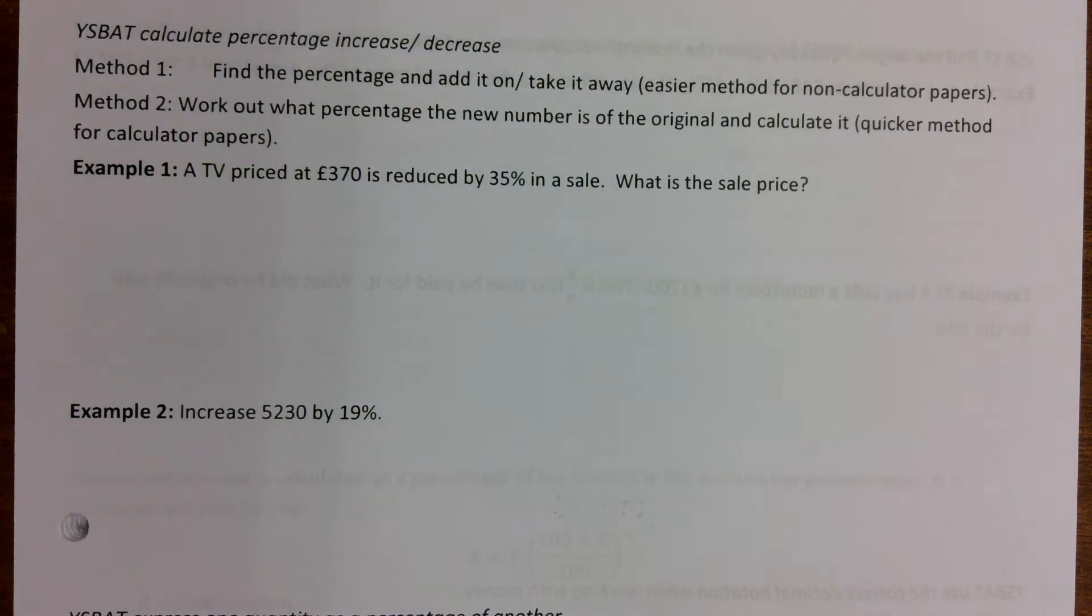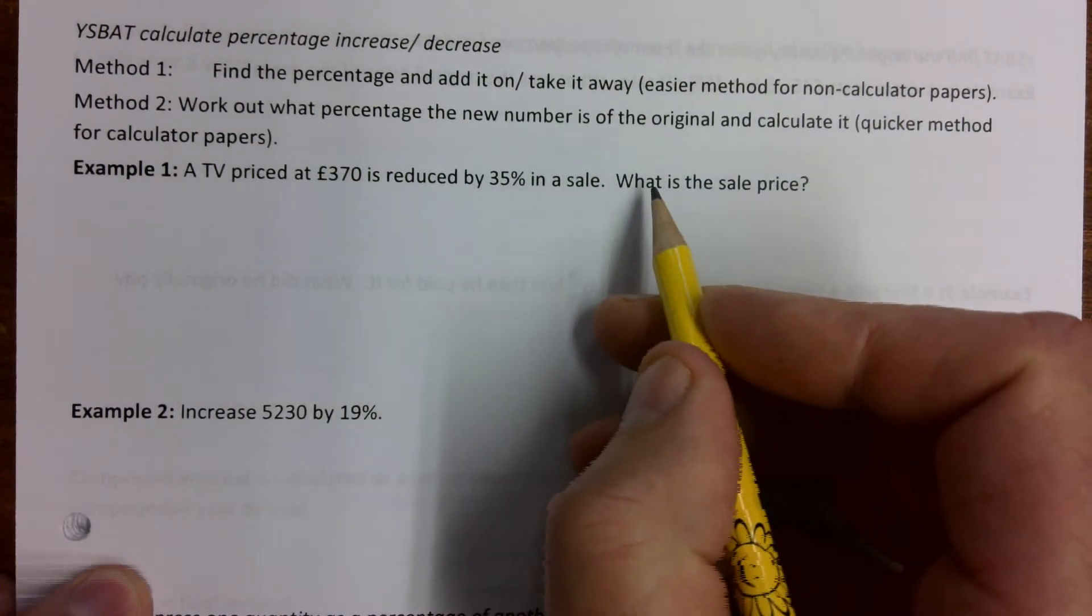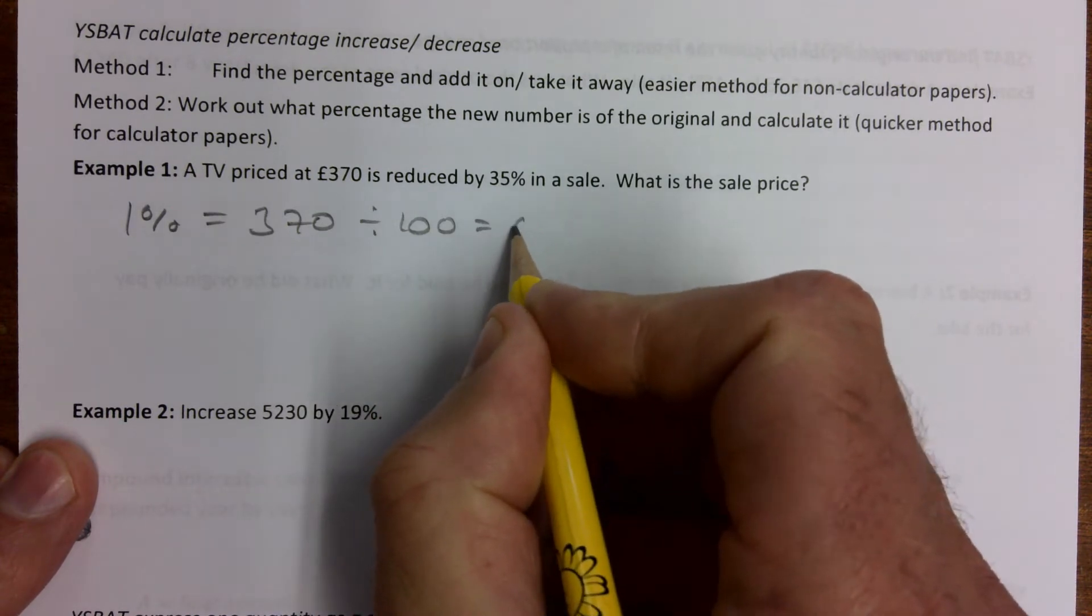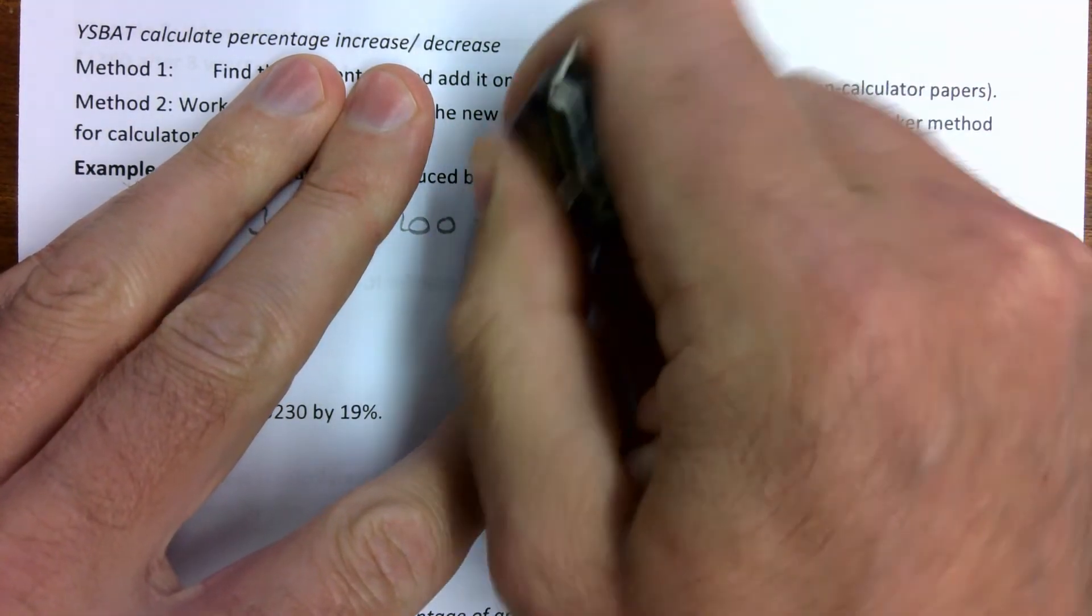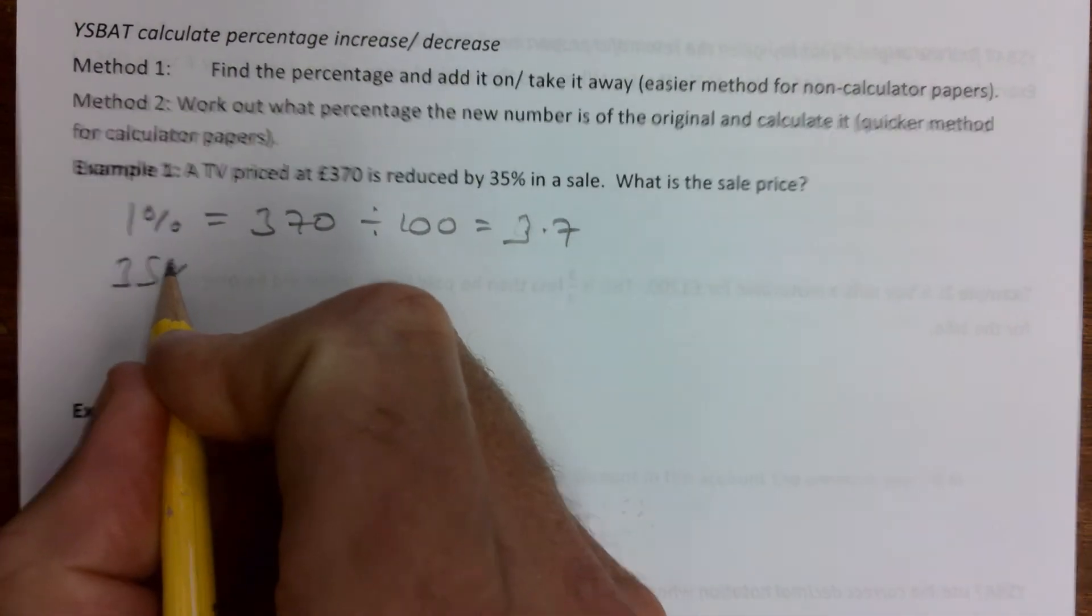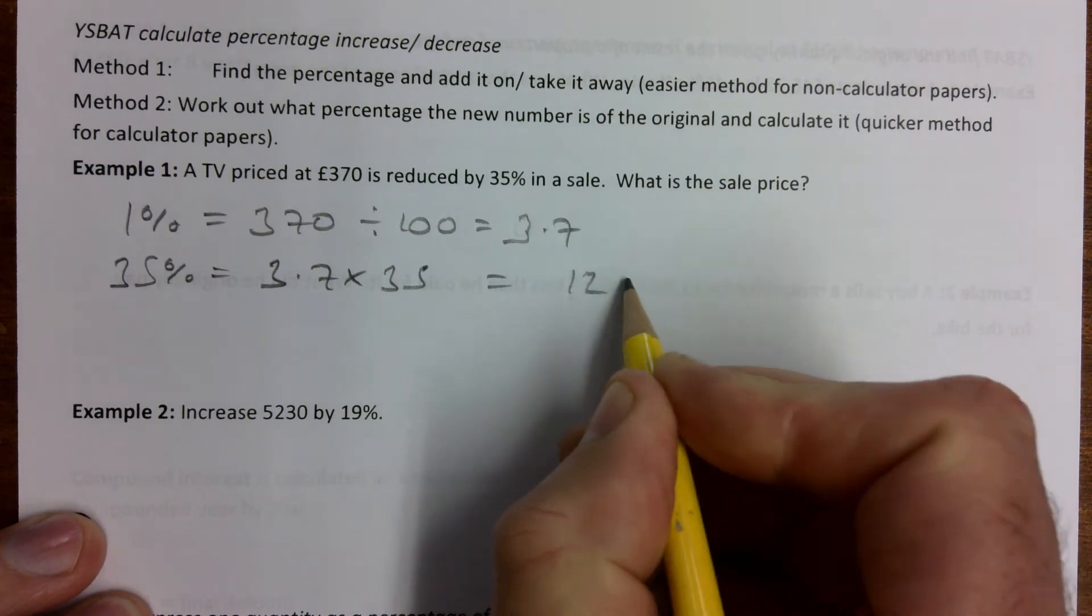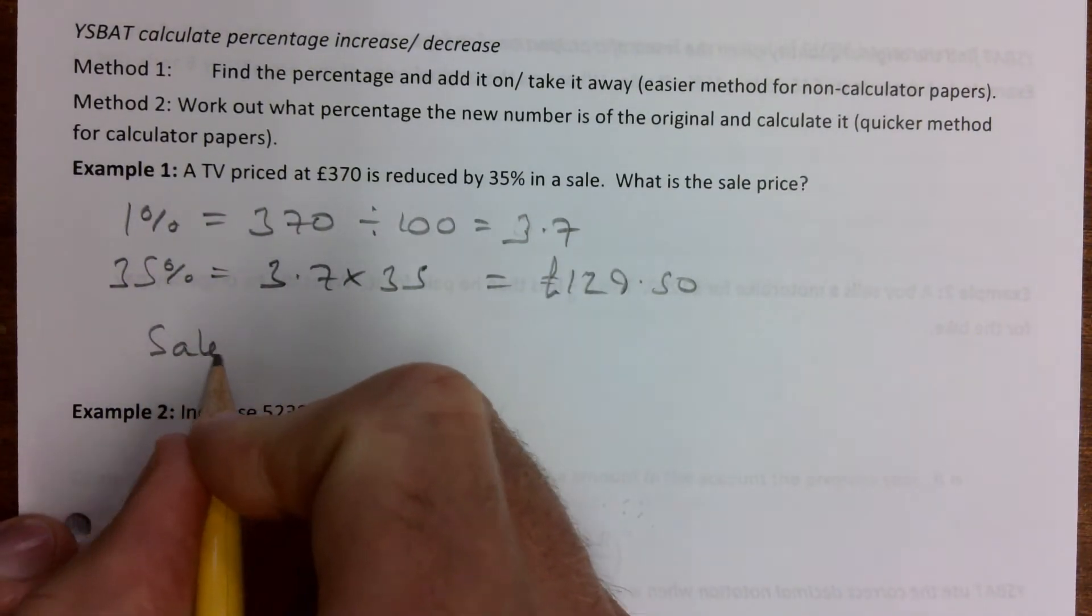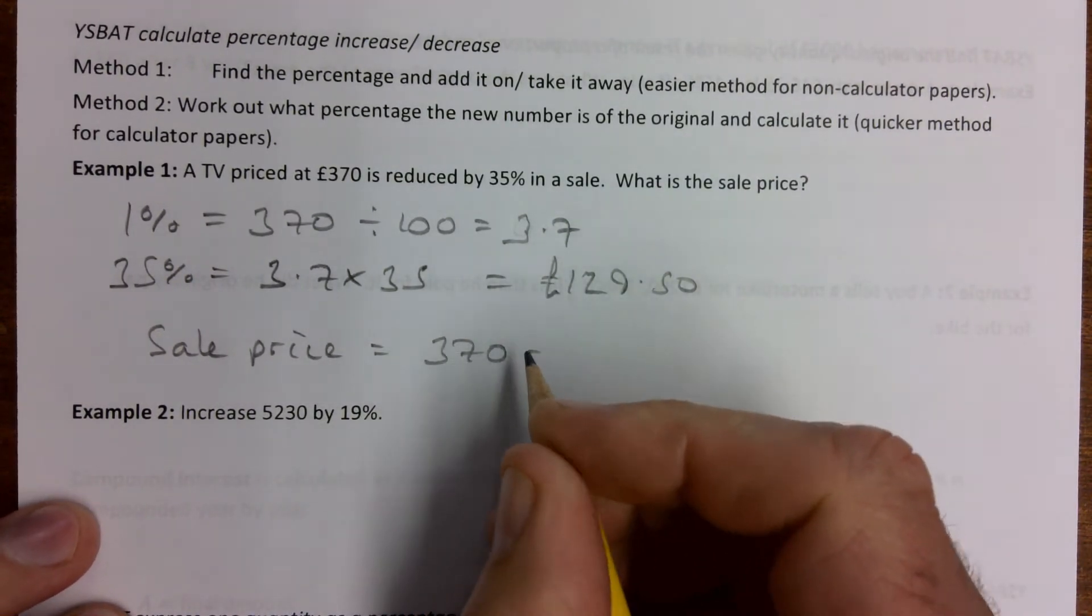On the percentage increase and decrease, you use the previous information we've just done. We find 35% of this and then we take it off. So 1% is 3.70 divided by 100 which is 3.7. Then 35% is 3.7 times by 35 and that ends up being £129.50. So we need to subtract it, so our sale price is going to be 370 take away £129.50 and that gives us £240.50.